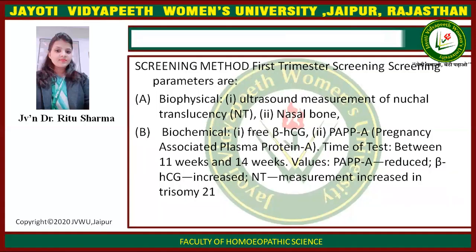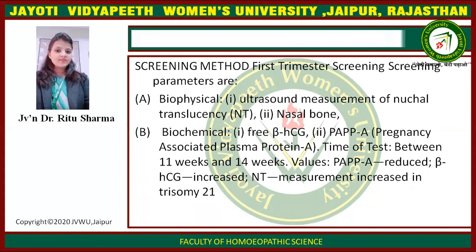Screening methods: first trimester screening parameters are biophysical — first, ultrasound measurement of nuchal translucency (NT), and second, nasal bone — and biochemical — first, free beta-hCG, and second, PAPP-A (pregnancy-associated plasma protein A). The time of test is between 11 weeks and 14 weeks. In Down syndrome, PAPP-A is reduced and beta-hCG is increased.